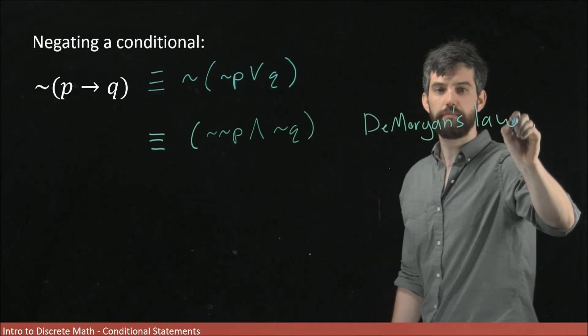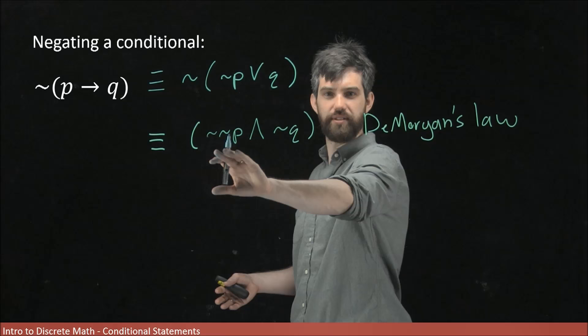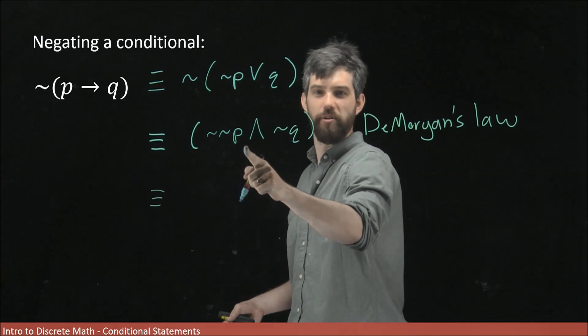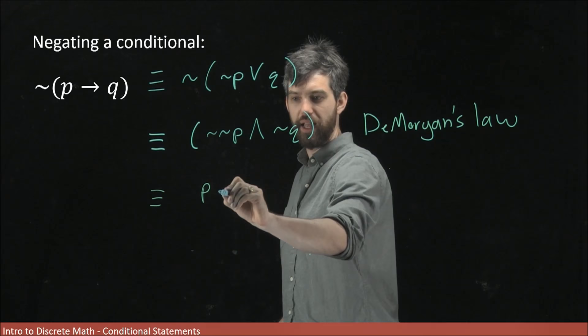And then I also note that here I have this double negative, and we've previously seen that I can manipulate the double negatives. Not not p is the same thing logically as just p, so I can say that this is p and not q.